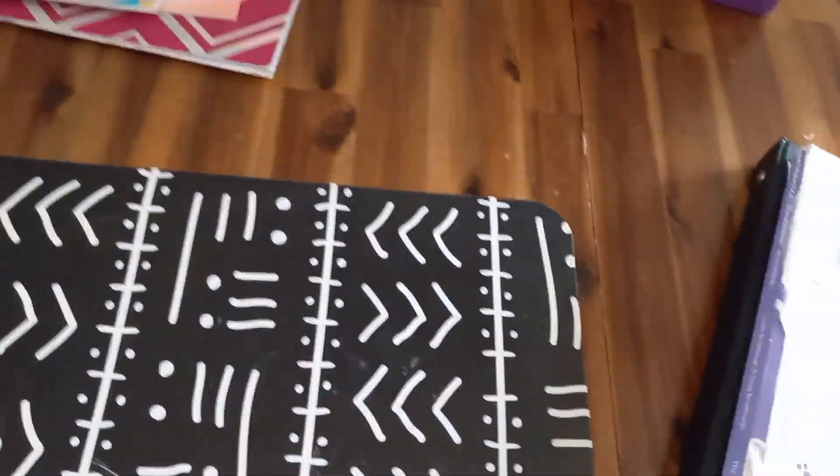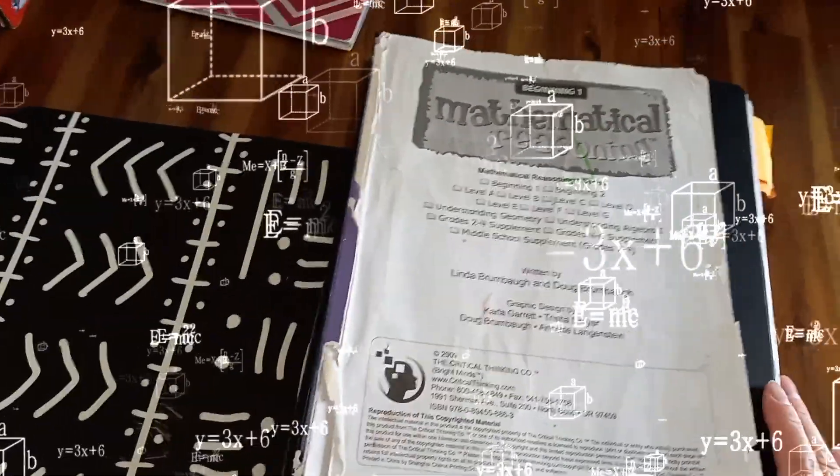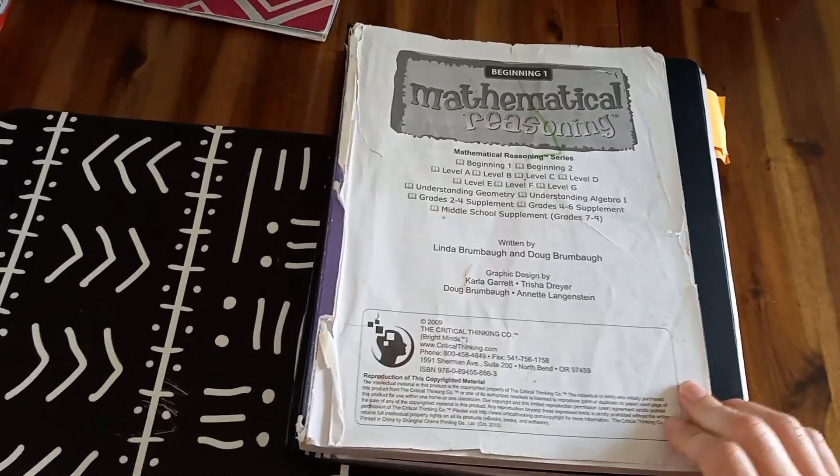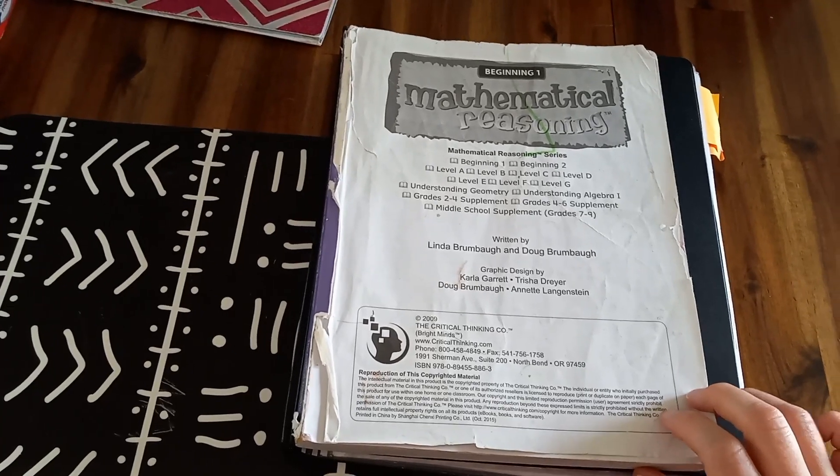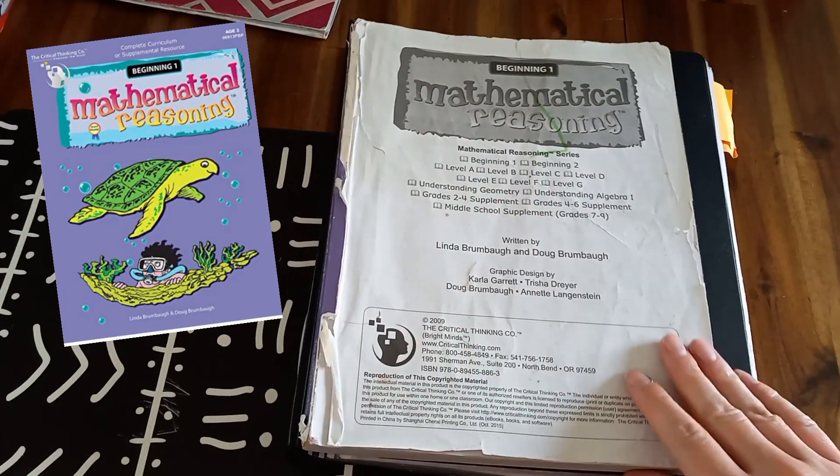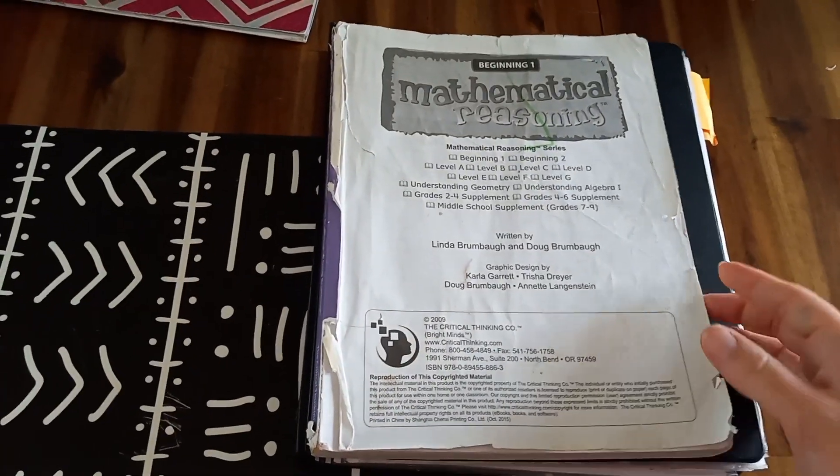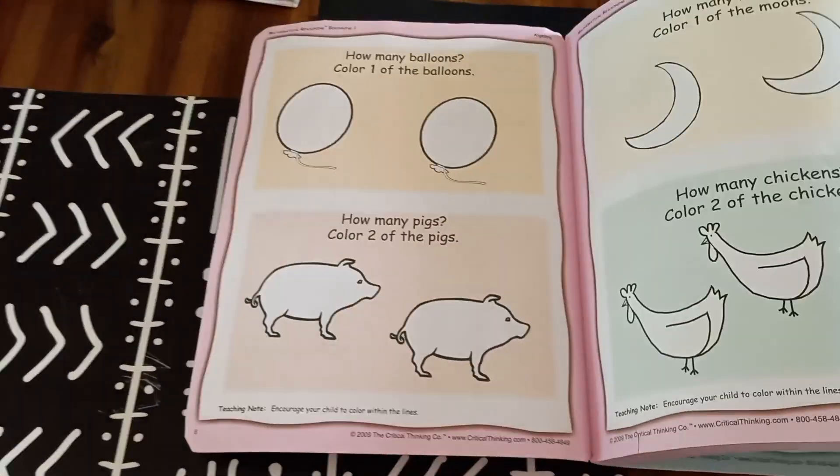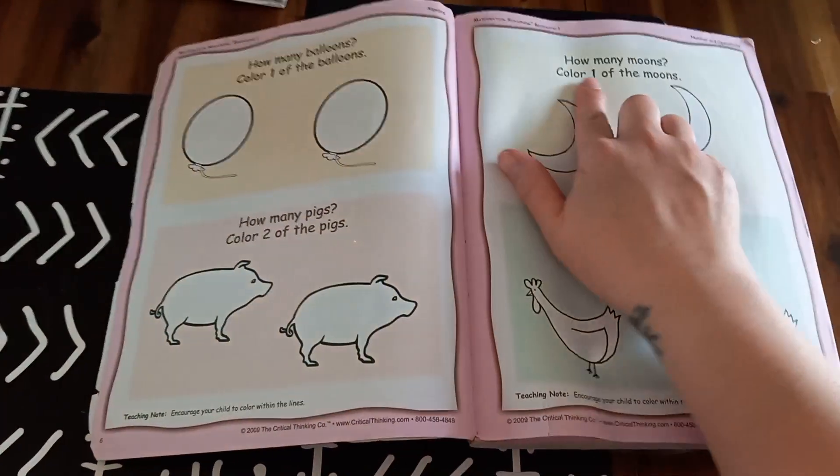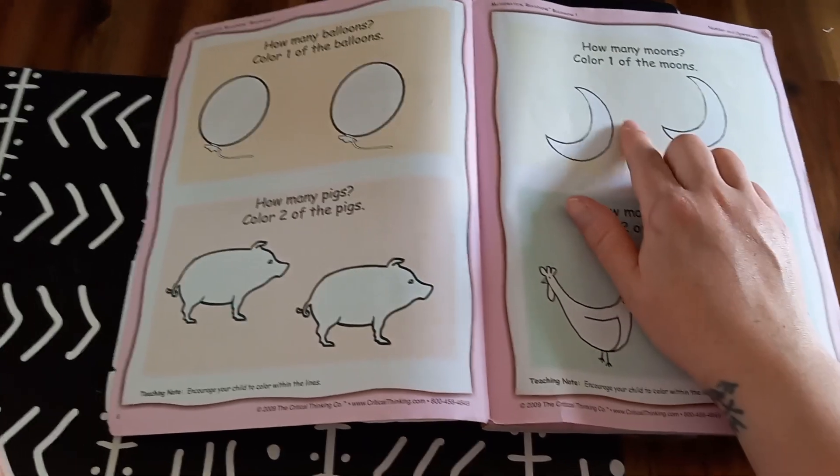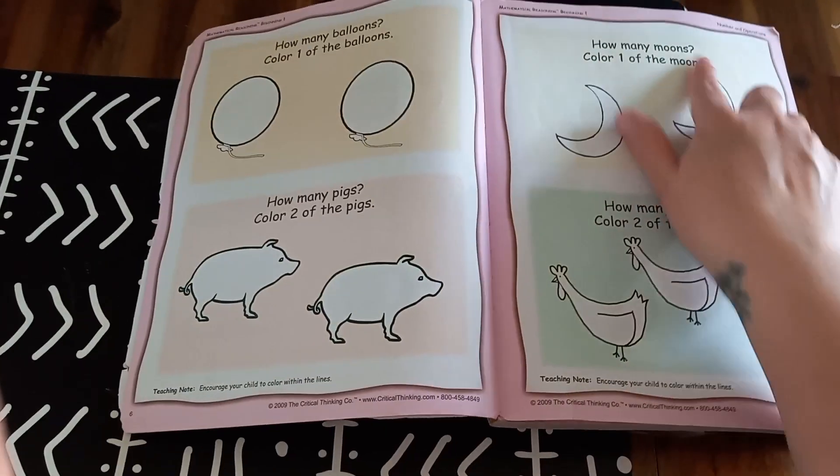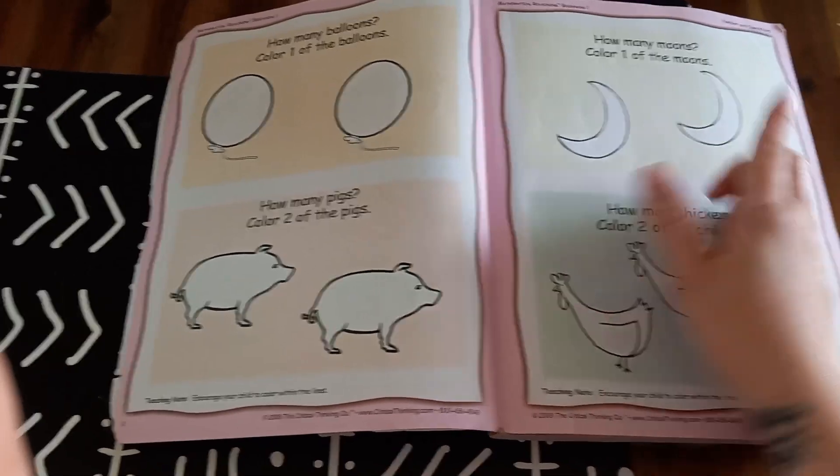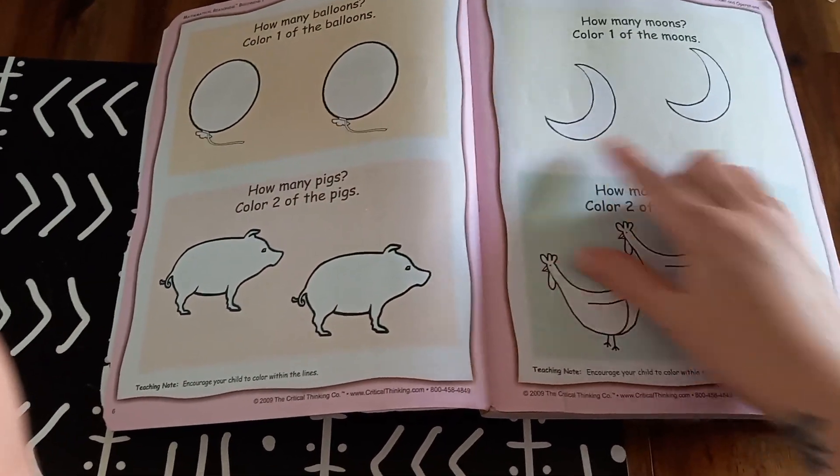Now we're going to move on to math. For math, I have two things that we use. The first thing is the mathematical reasoning. Yes, the cover ripped off of this book. So I'll leave a picture up here in the corner of this book so you can see what it looks like. This is just the beginning level. And we go through this book. They do like two pages a day. And it's just simple. I don't have them color anything in the book because I like to reuse it. So what I do is I have them place manipulatives. If it says how many moons, they'll count. And then it says color one of the moons. Instead of color, I say okay, put cover up one of the moons. So they'll use a manipulative to cover up one of the moons.